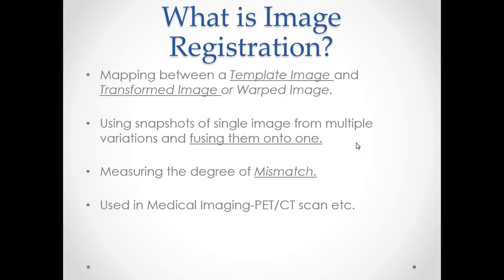Now, what is image registration? Image registration is a process of transforming different sets of data into one coordinate system. If we have a template image and a transformed image, we have some sort of mapping between them and this mapping should be parameterized — it should depend on a parameter. If we get the parameter exactly or close enough, we can use bilinear transformation to get back the original template image from the transformed image.